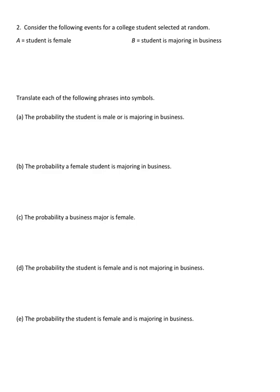Number two, consider the following events for a college student selected at random. Event A, a student is female. Event B, a student is majoring in business. Translate each of the following phrases into symbols. Now from the probability video, we also learned complements, which are opposites. So A complement would be student is male. And B complement, student is not majoring in business.